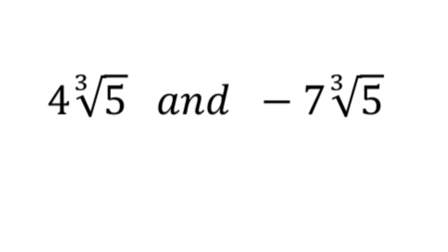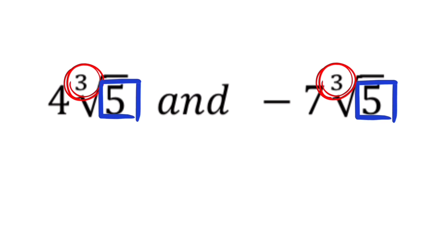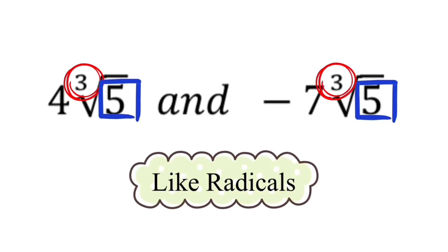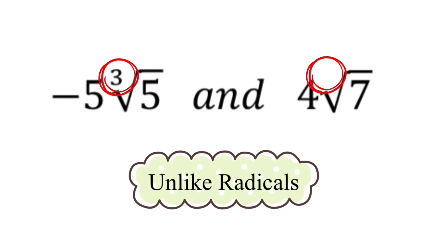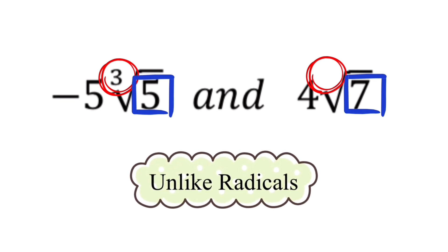In the first example, we have 4 times the cube root of 5 and negative 7 times the cube root of 5. Both indices are 3 and both radicands are 5, so these two expressions are like radicals. In the next example, we have indices of 3 and an invisible 2 — since 3 and 2 are not the same, these are unlike radicals. Their radicands are 5 and 7, also different, which further confirms they are unlike radicals.